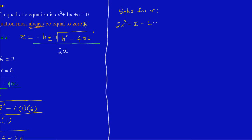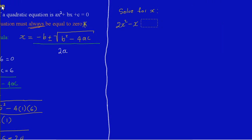Minus 6... let's make it a bit more interesting. Let's get rid of that, so we have 2x squared minus x, and that is equal to 6. Yes, I like that.